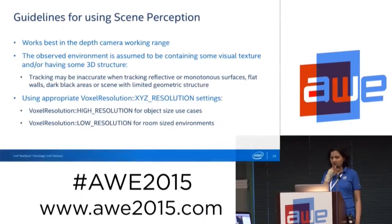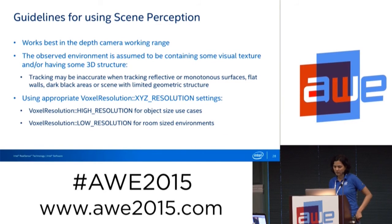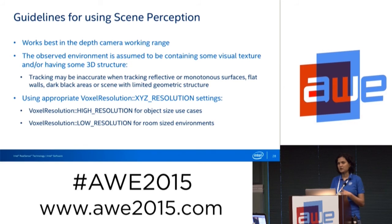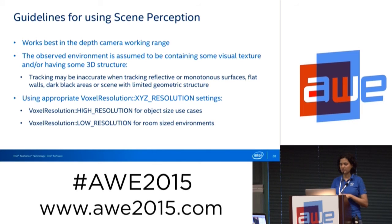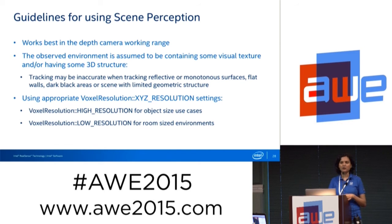Some general guidelines: since you're using the depth camera, the limitations of the depth camera apply equally to the scene perception module. The observed environment is assumed to contain visual texture and geometry — shiny objects or plain surfaces like carpet or a wall may not work adequately. It's also important to set the voxel resolution appropriately: if your application is tracking close-range objects, don't set it to lower resolution or you'll miss out on data quality. Conversely, if you're capitalizing on the camera's complete range, set it to lower resolution since you're getting a larger field of view and can compromise a little on resolution.